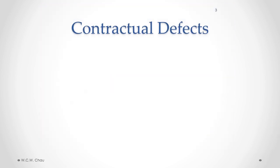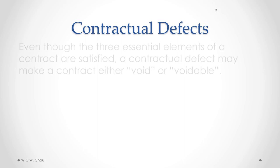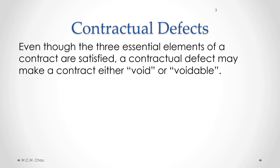We know that we need three essential elements to form a legally binding contract. Those three elements are: number one, an agreement formed by an offer and an acceptance; the second requirement is a mutual exchange of consideration; and the third is an intention to create legal relations. So even in situations where we have all three of those essential elements satisfied, there may still be something considered to be a contractual defect, which may make a contract either void or voidable.